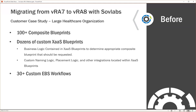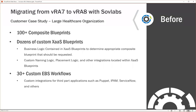This customer also had over 30 custom EBS workflows being used to do various integrations and enhancements within VRA 7, many of them providing business logic into the provisioning process specific to the organization. Integrations they were using included Puppet, IPAM, ServiceNow, and other customizations for custom naming, DNS, and Active Directory, all tailored around their custom business needs — all of which would have needed to be rewritten and retooled for VRA 8.